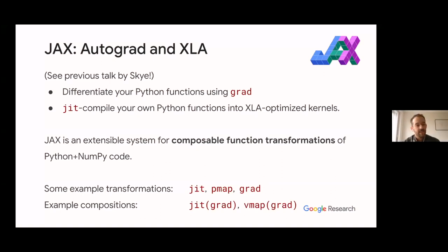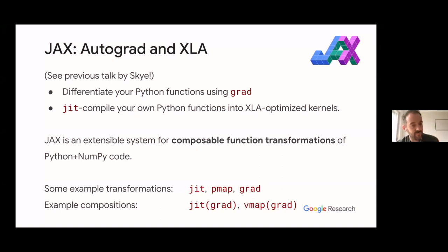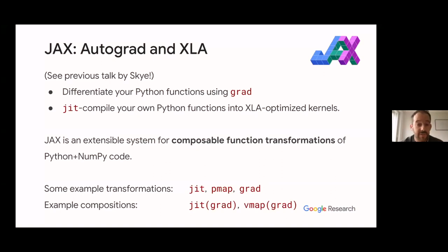Another way to look at this: JAX is an extensible system for composable function transformations. JIT, pmap, and grad are all function transformations — they take a function as input and return a new function. Importantly, JAX uses a functional API, meaning it only guarantees correct behavior when using functions without side effects. Side effects typically result from mutating an object outside the function. This functional API is a key reason why XLA can do such a good job optimizing.